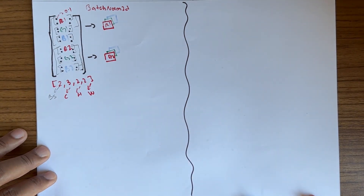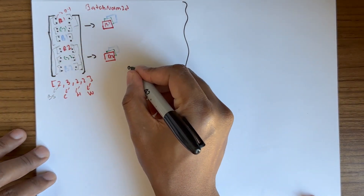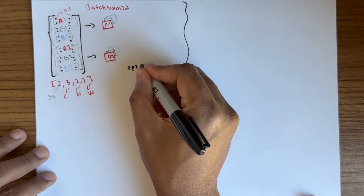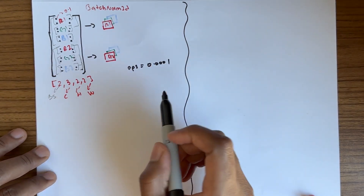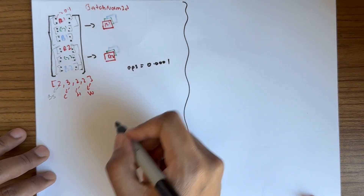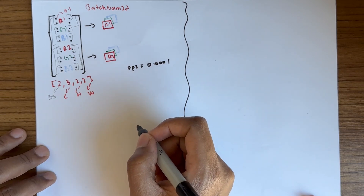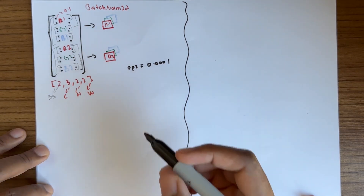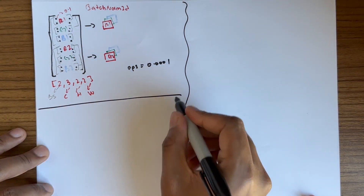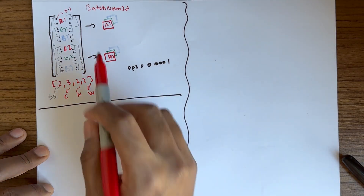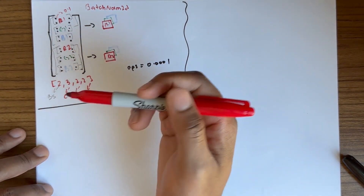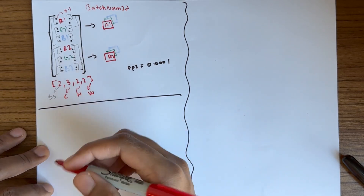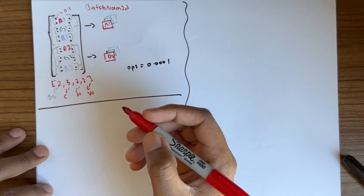There's also a separate number, epsilon, which we are going to use later. It's a very small number. In batch norm, data points will be across batches — statistics will be calculated across batches. So let's pull in R1 and R2.